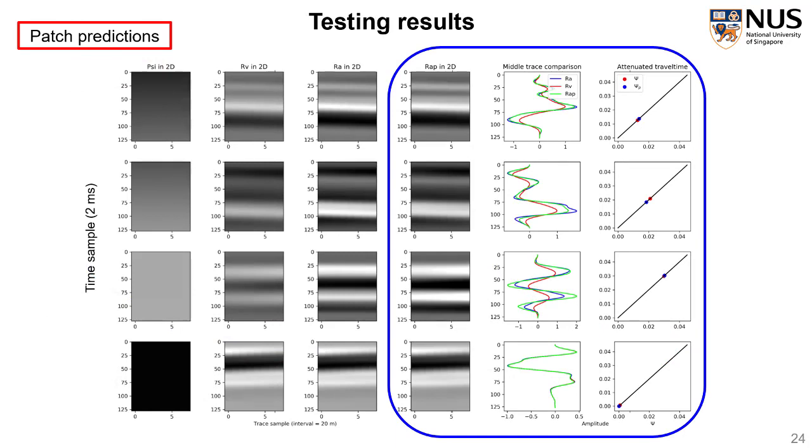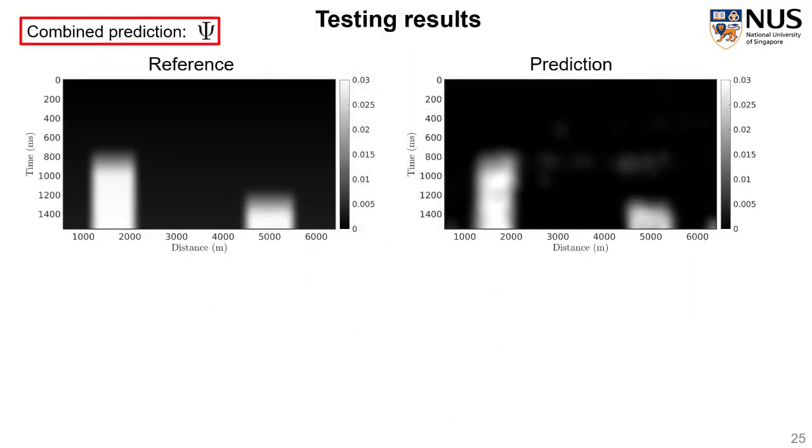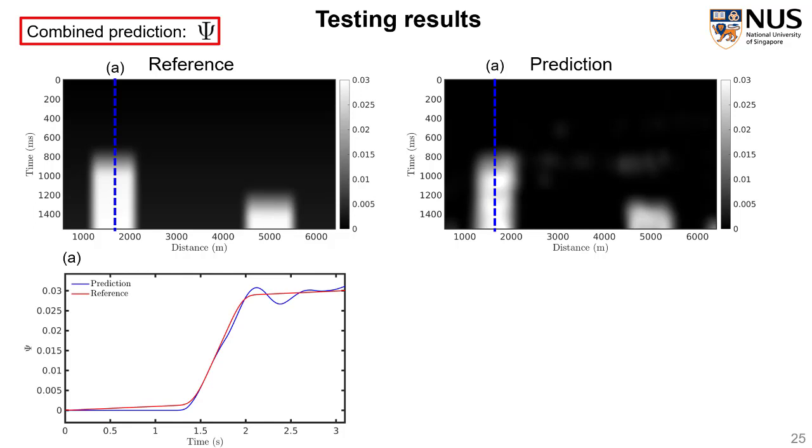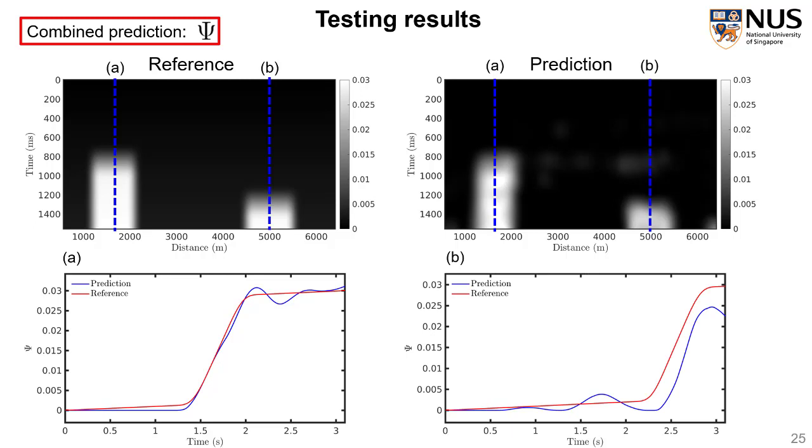Then we applied our well-trained neural network to the test dataset. The four selected patches, same as before, has some predictions. We can see, although it's not as good as the training dataset, but still very acceptable for RA fitting and for the ψ fitting. We also combine the patch ψ estimation and smooth the combined predictions. The results are shown in the right-hand side against the reference ψ obtained from the accurate Q model. The smooth prediction looks quite consistent with the reference. We can also compare the left trace at the distance of 700 meters and the right trace at the distance of 5,000 meters. The attenuation estimation in 1D is also quite satisfying.